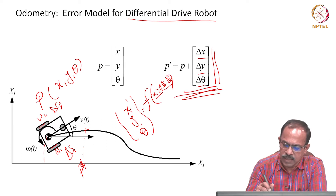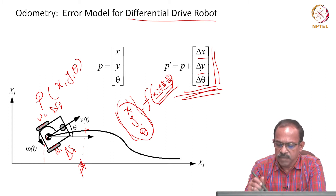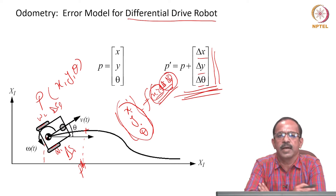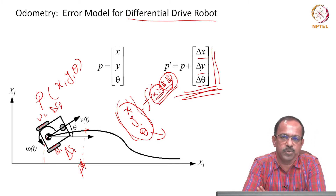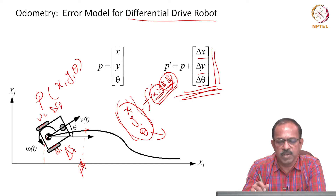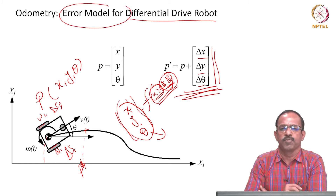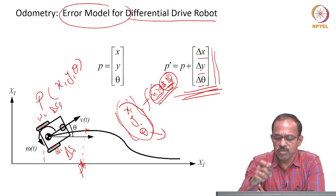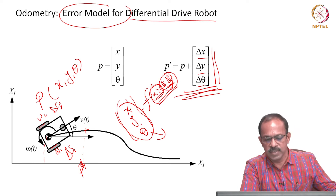If there is any error in the previous position x, y, theta or any error in delta_s_r and delta_s_l, that will lead to an error in the estimate of the new position. We need to estimate how much error there will be in the new position given errors in delta_s_r, delta_s_l, and the previous position estimate. We will see how to generate an error model for this differential drive robot based on encoder information.